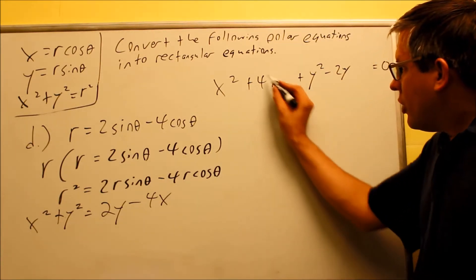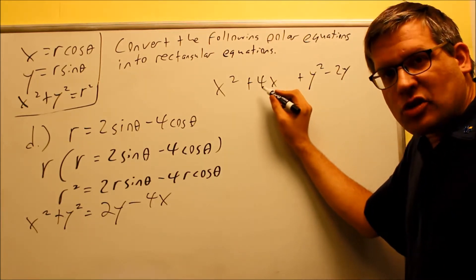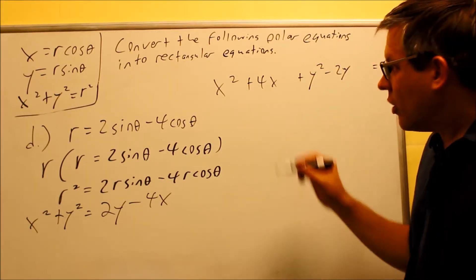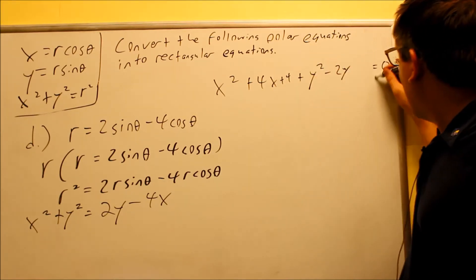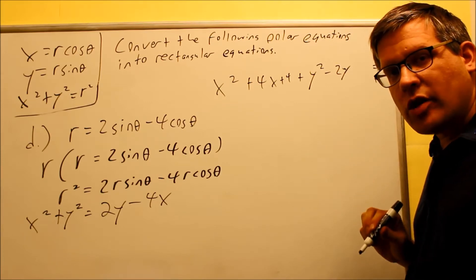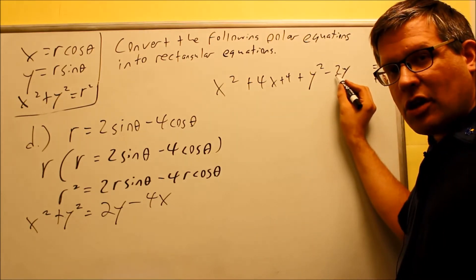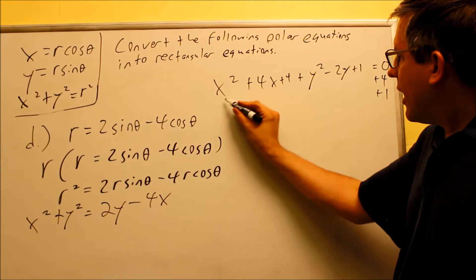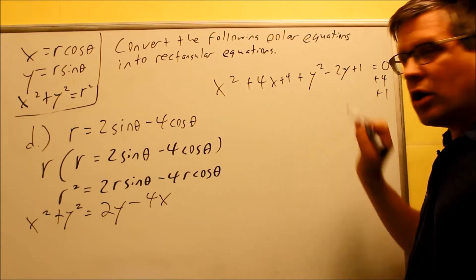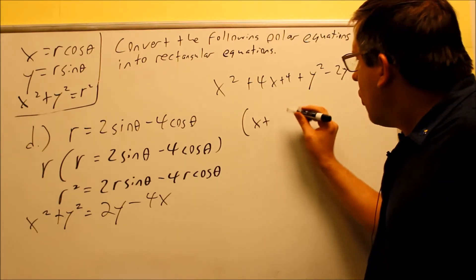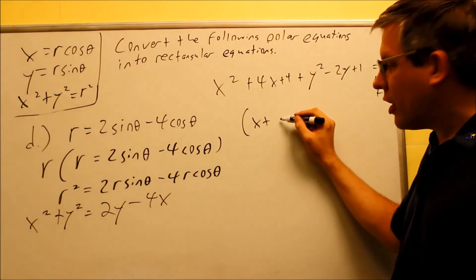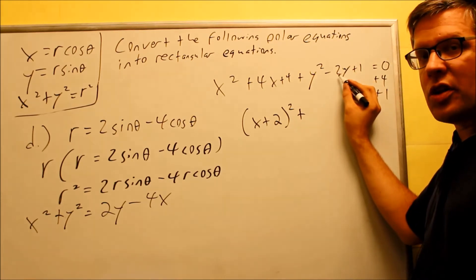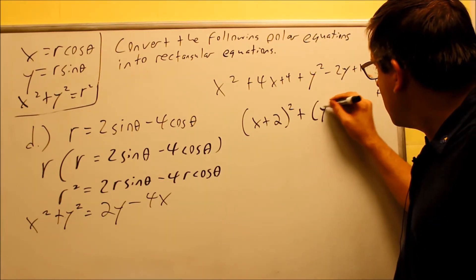When you complete the square, you take the middle coefficient, divide by 2, and square it. For the x terms: 4 divided by 2 is 2, squared gives 4 — so add 4 to both sides. For the y terms: negative 2 divided by 2 is negative 1, squared gives positive 1 — so add 1 to both sides. This creates perfect squares that we can factor. The x group factors as (x plus 2) squared — since 4 divided by 2 is 2. The y group factors as (y minus 1) squared — since negative 2 divided by 2 is negative 1.